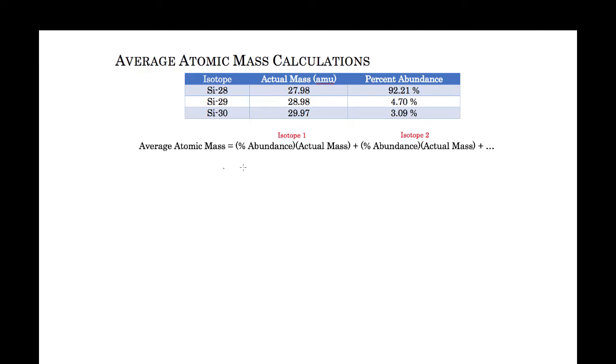So how do we do this step by step? It's pretty simple. To figure out the average atomic mass, we just need to take that percent abundance and multiply it by the mass—the actual mass, not the mass number, but the actual mass of the various isotopes.